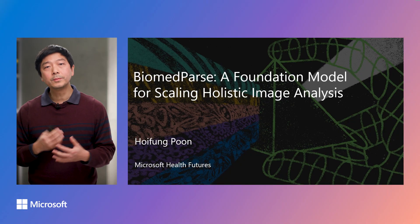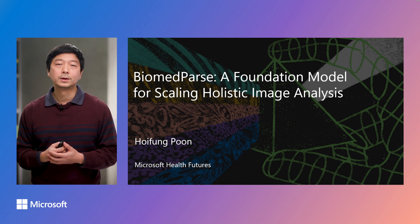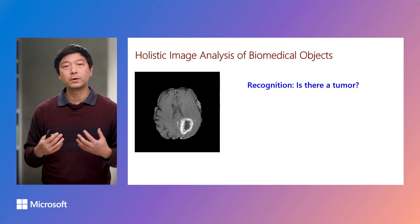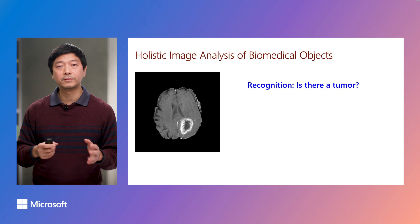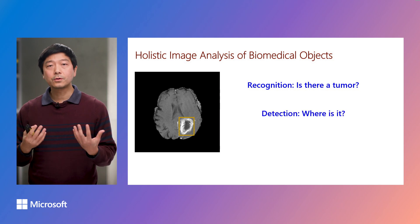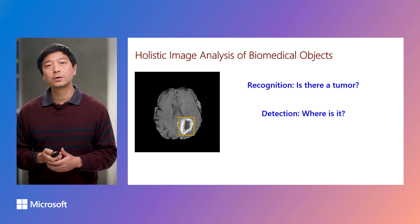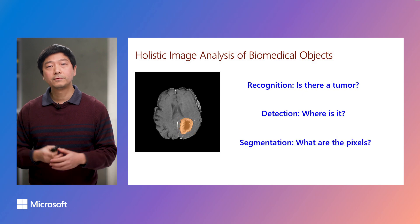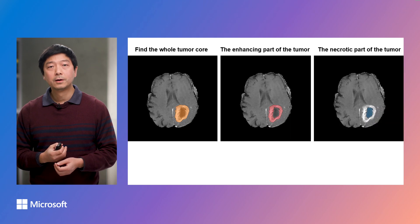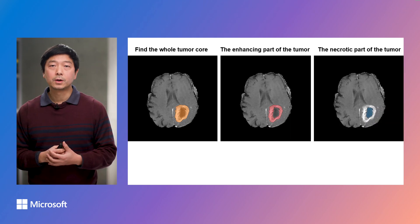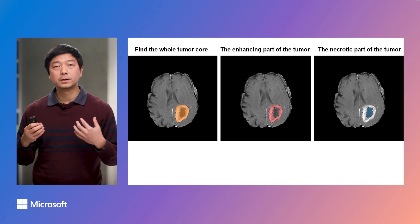As many of you know, image analysis is foundational to clinical diagnostics and biomedical discovery. It comprises three interdependent tasks for analyzing biomedical objects. First, recognition determines if the image contains a given object. Then, detection identifies where exactly the object is located, often using a rectangular-shaped bounding box. Finally, segmentation identifies the precise pixels for the object segment. For example, given a brain MRI image, we need to identify the tumor core as well as the enhancing part and the necrotic part.